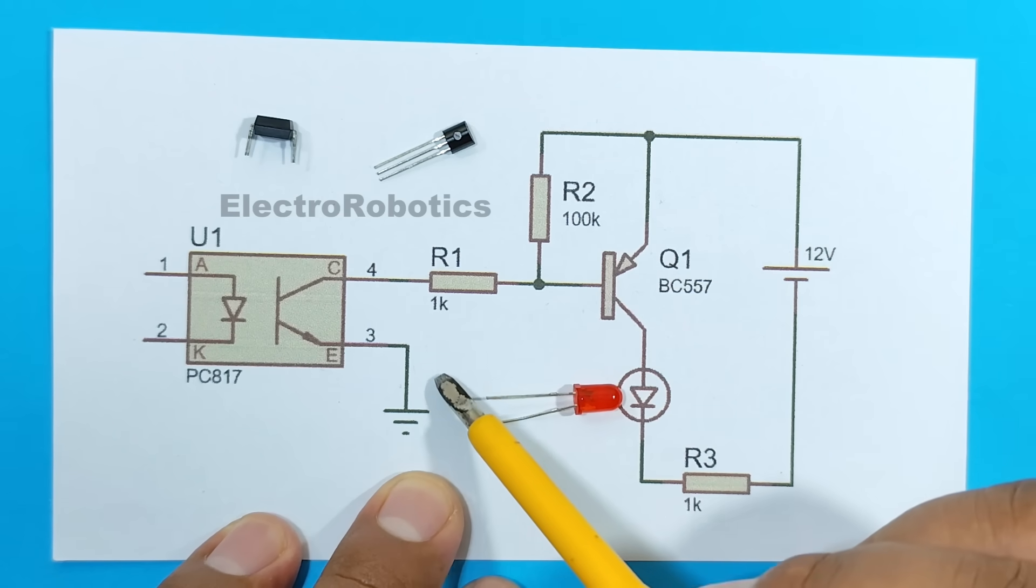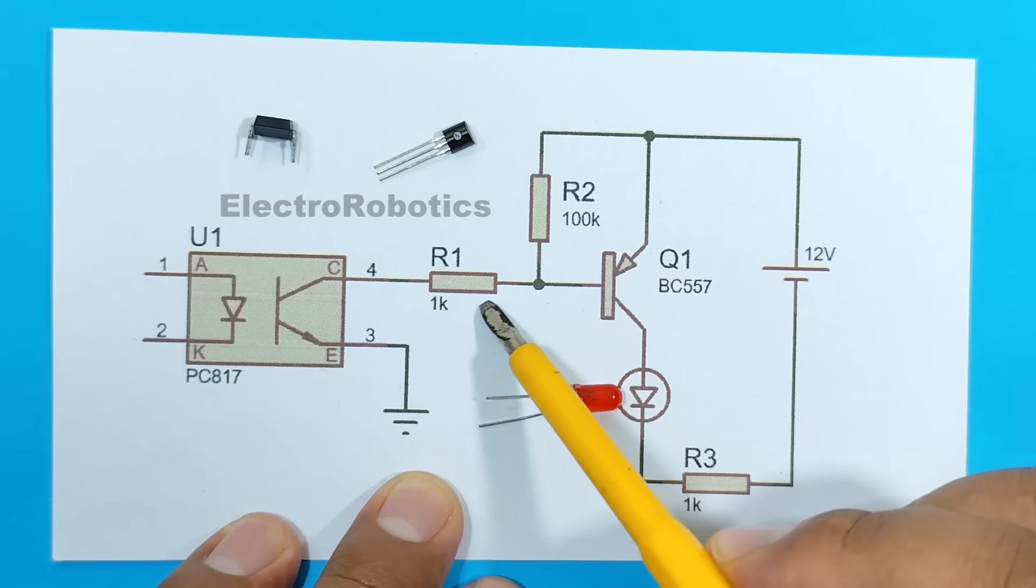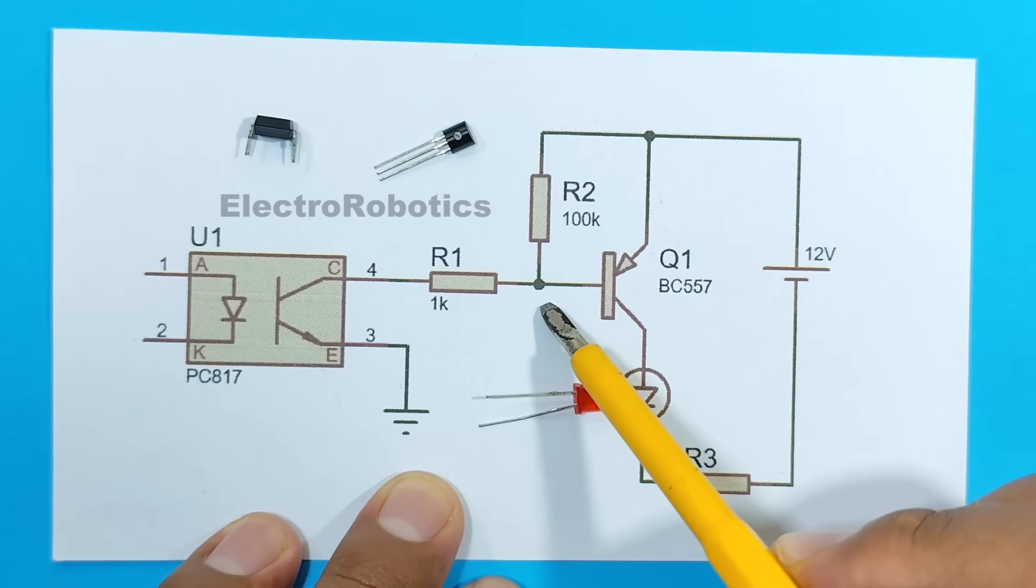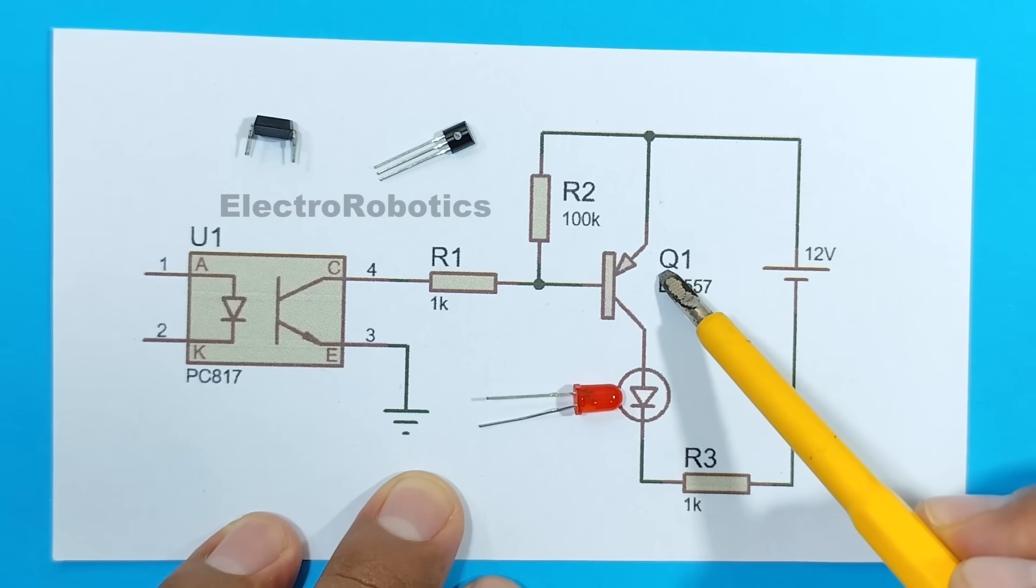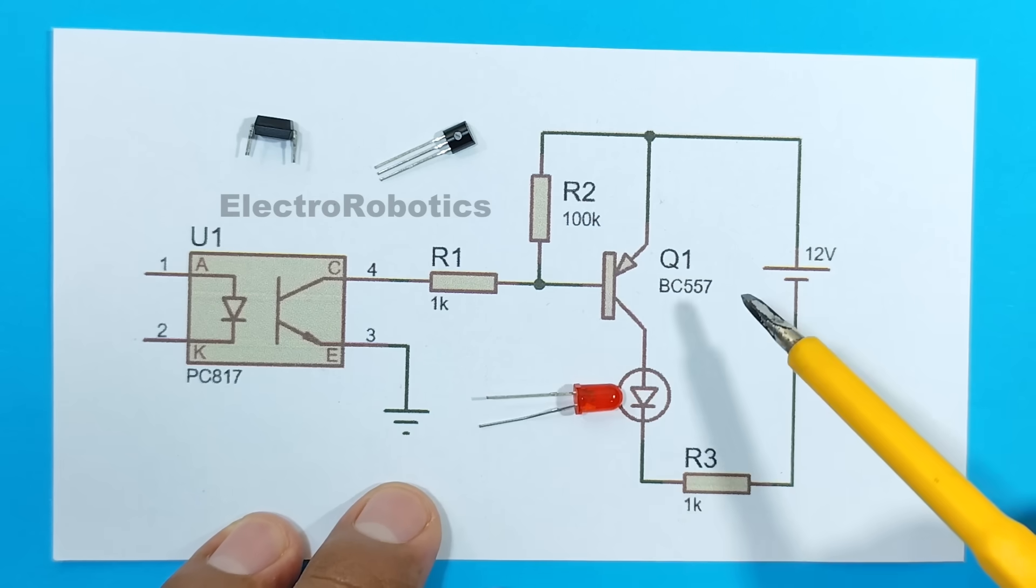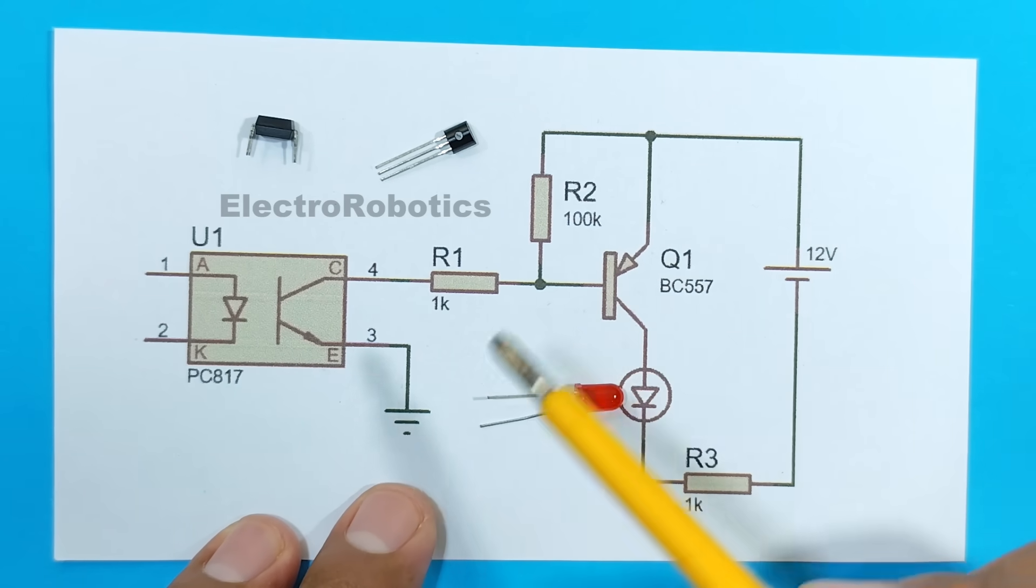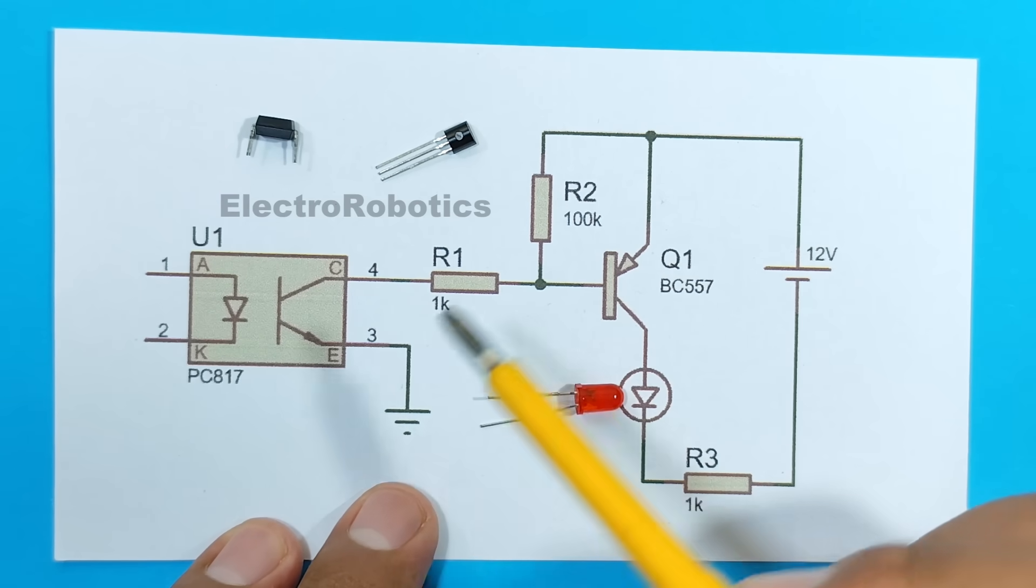Therefore, the only way for this transistor to work is with the signal from the optotransistor. Because when it is activated, a small negative signal passes through, which will replace that positive signal, activating the transistor and turning on our LED. In this way, our circuit will amplify the signal from the optotransistor.